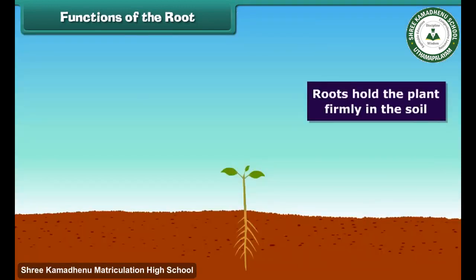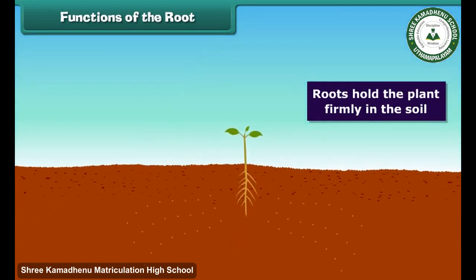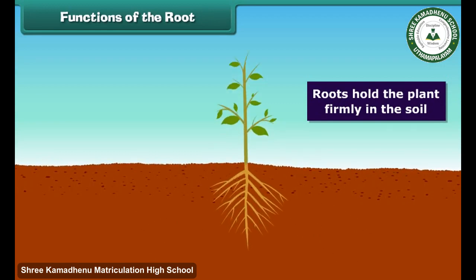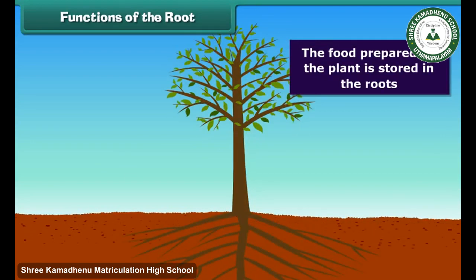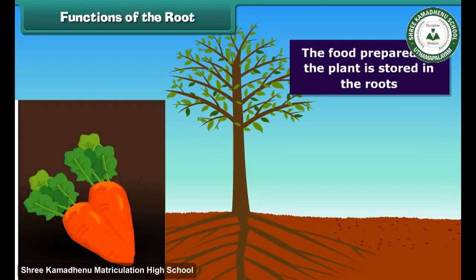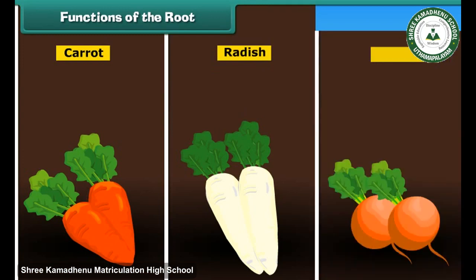Roots hold the plant firmly in the soil. They also absorb water and nutrients from the soil and send them to the other parts of the plant. Roots also perform the function of food storage in some plants, such as carrot, radish and turnip. The food prepared by the plant is stored in the roots, and we eat these roots to get nutrition.